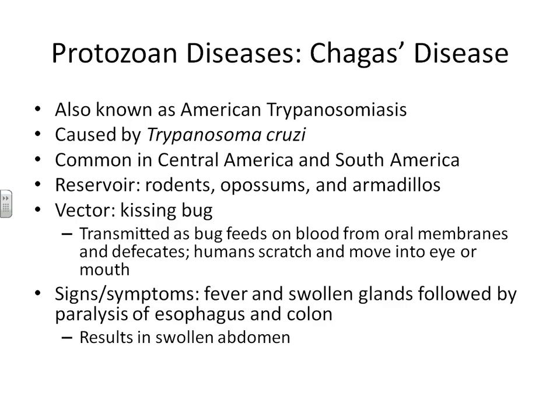Now let's look at a couple of protozoan diseases of these body systems. The first one to discuss is Chagas disease. Chagas disease is an infectious disease that is emerging in the United States, so it's becoming of much more interest to all of us. Chagas disease is also known as American trypanosomiasis. It is caused by a flagellated protozoan called Trypanosoma cruzi. Trypanosoma is extremely common in Central America and South America, but as temperatures are rising and immigration is rising, this protozoan is more likely to come into the United States. Trypanosoma cruzi is found in the reservoir rodent, possum, and armadillo. It is transmitted, most commonly from a rodent, by a bug called the kissing bug or triatomine bug.